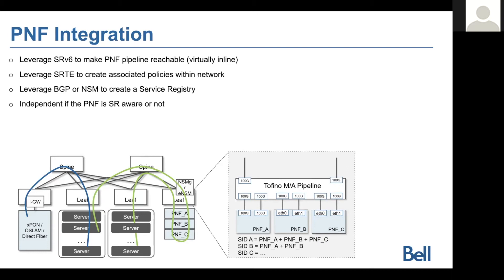We also benefit from the service programming model underlying SRV6 network programming: I can leverage BGP-T or SRT to create associated policies in my network. I can come from a physical world, attach a policy that makes it reachable to the virtual world or another physical device and back, without any complex orchestration mechanism — using BGP control planes or new registry systems like network service mesh to create those service registries and chains.